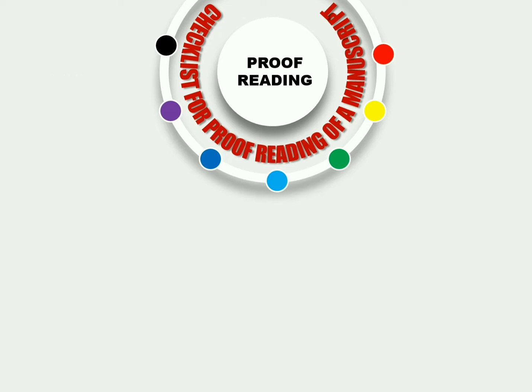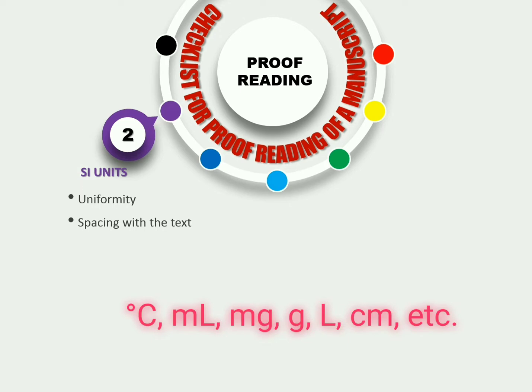The second point of consideration is the use of SI units. Various types of SI units are used in scientific reports, for example degree Celsius, milliliter, milligram, gram, meter, centimeter, etc. In these cases, sign uniformity is very much required. Uneven presentation of SI units is highly discouraged. All the units should be checked separately for uniformity. At the same time, the spacing between numerical values and units should also be uniform.